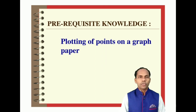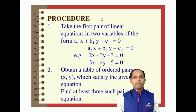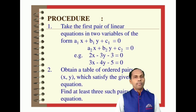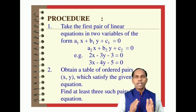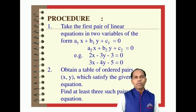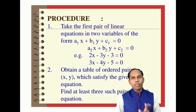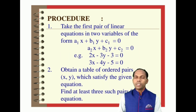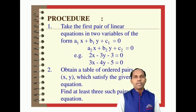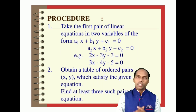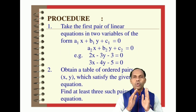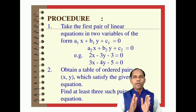For the procedure, first of all you have to know about the pair of linear equations. The general form of a pair of linear equations is: a1x + b1y + c1 = 0 and a2x + b2y + c2 = 0. We have to take a pair of linear equations in two variables.